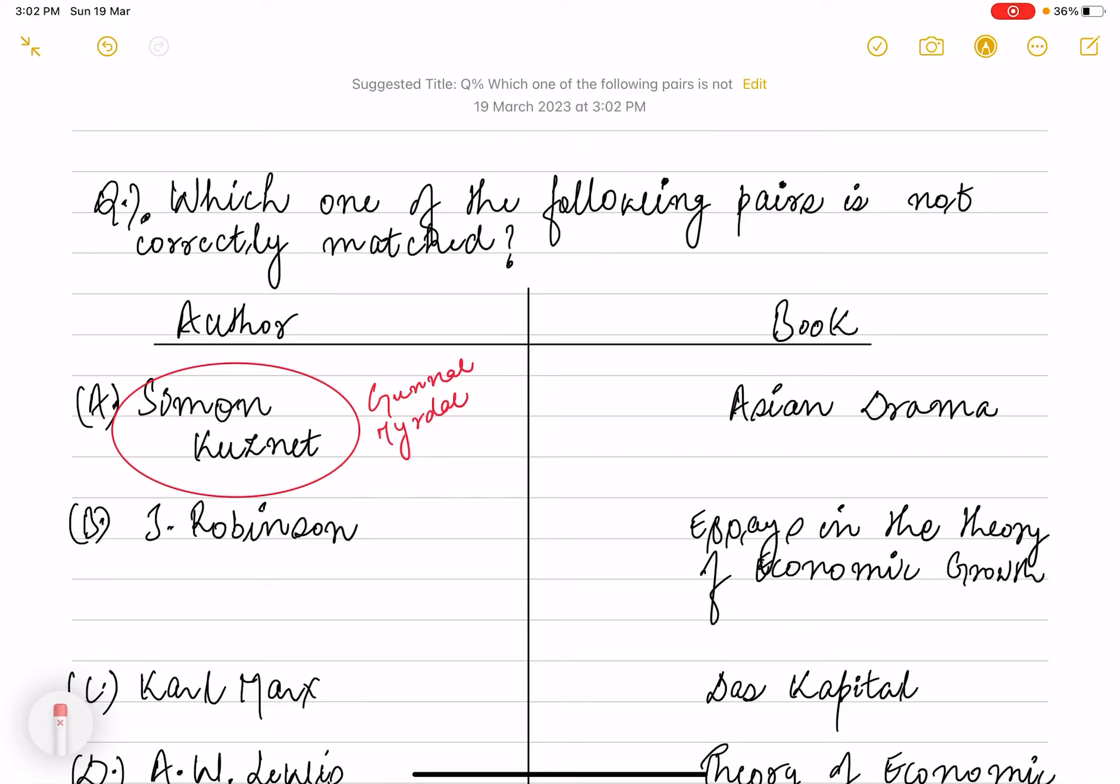Hello everyone, welcome to Chiknomics by Vishwan Arpata. We will discuss some questions in today's video which were asked in UGC net exam in shift 1 and shift 2. Do stay tuned for that. Which one of the following pair is not correctly matched?